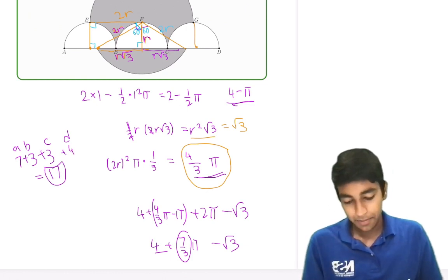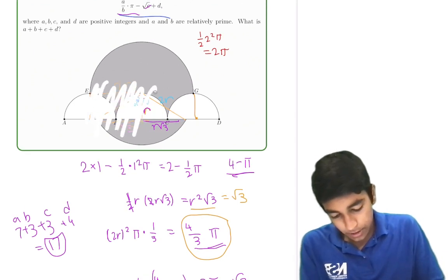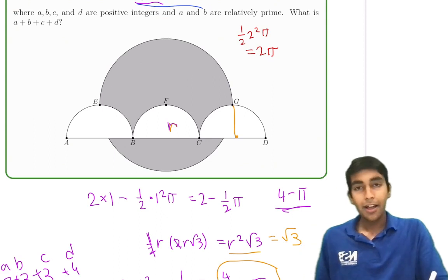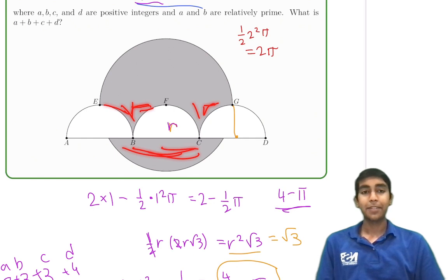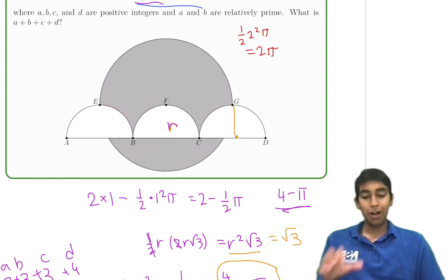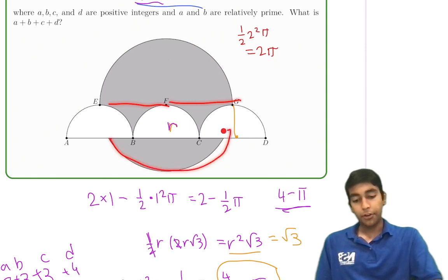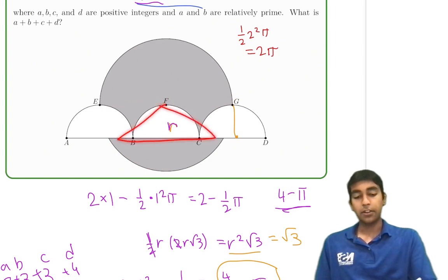Great problem! The key idea was breaking it into three main types of regions: the semicircle on top, the two rectangular-minus-arc regions on the sides, and the bottom region found by subtracting the triangle from the sector using 30-60-90 triangle properties.